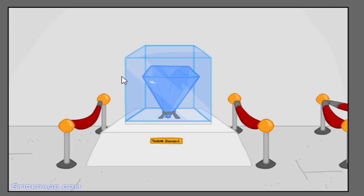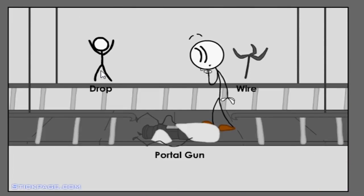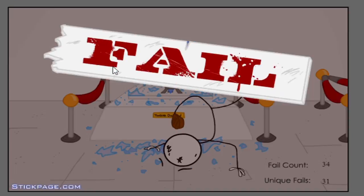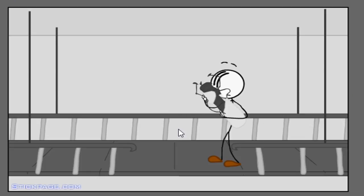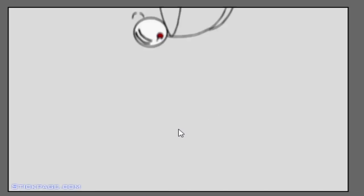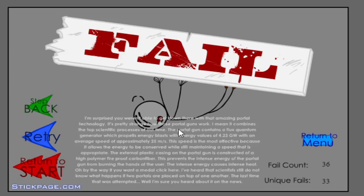Do we want to ignore common physics? Hell yeah, let's just draw. I mean yeah it was a possibility. Portal gun, come on let's just go for the obvious. How did they go for the glass? Oh no. Surprised we weren't able to get down there with that amazing portal technology. It's pretty strange how those portal guns work. According to the top scientific processes of our time, the portal gun contains a flux quantum generator which propels energy blasts with energy values of 4.23 gigawatts with an average speed of approximately 25 meters per second. I'm gonna stop because my brain's supposed to go no just no but I'm dying.